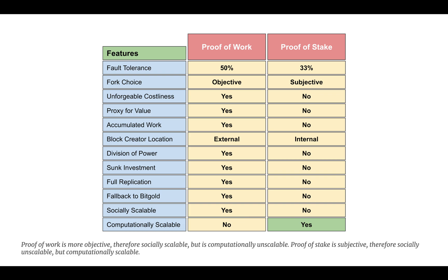Computational scalability: this is the main feature where proof of work is less performant and proof of stake systems are very useful, perhaps in combination with proof of work systems. Proof of work requires a lot of computation, so blocks can only be created every 15 seconds to 10 minutes, with additional physical restrictions in local processing and global propagation. This makes proof of work computationally unscalable compared to proof of stake.